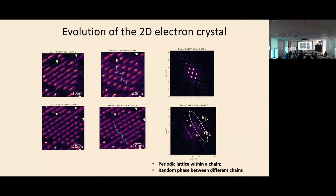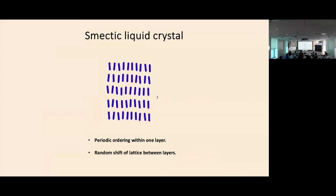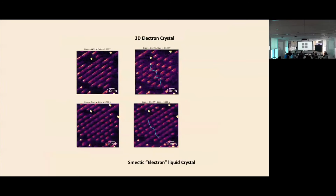The random phase difference between different chains is driven by disorder — each chain has slightly different random disorder. When the chain-chain interaction is very strong, the electron lattice stretches to have exactly the same period and forms ordered behavior. When the chain-chain interaction is very weak, each chain just has a random phase. You have order along one direction and disorder along the other — analogous to a smectic electron liquid crystal phase.